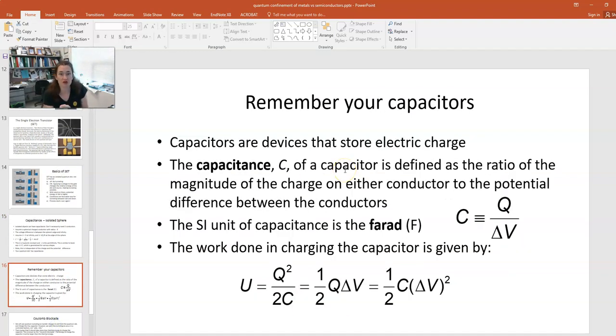So remember that your capacitors, and this is also from intro physics, are devices that store electric charge. So the capacitance of your capacitor, C is equal to Q over delta V, and when your capacitor is charged, the potential energy of your capacitor can be expressed in any number of different ways here. We've got the potential energy is equal to Q squared over 2C,